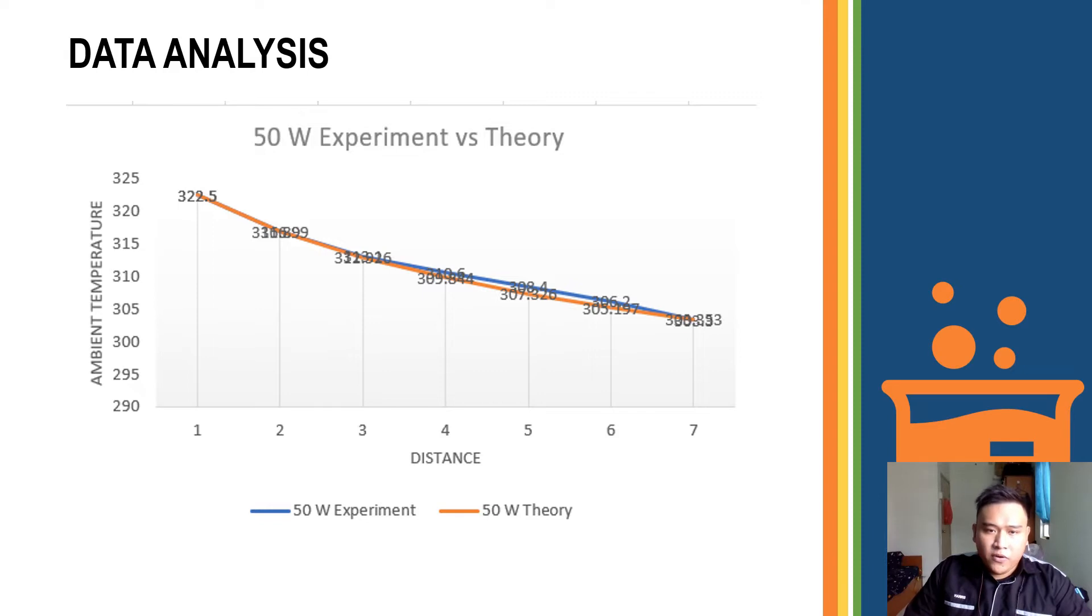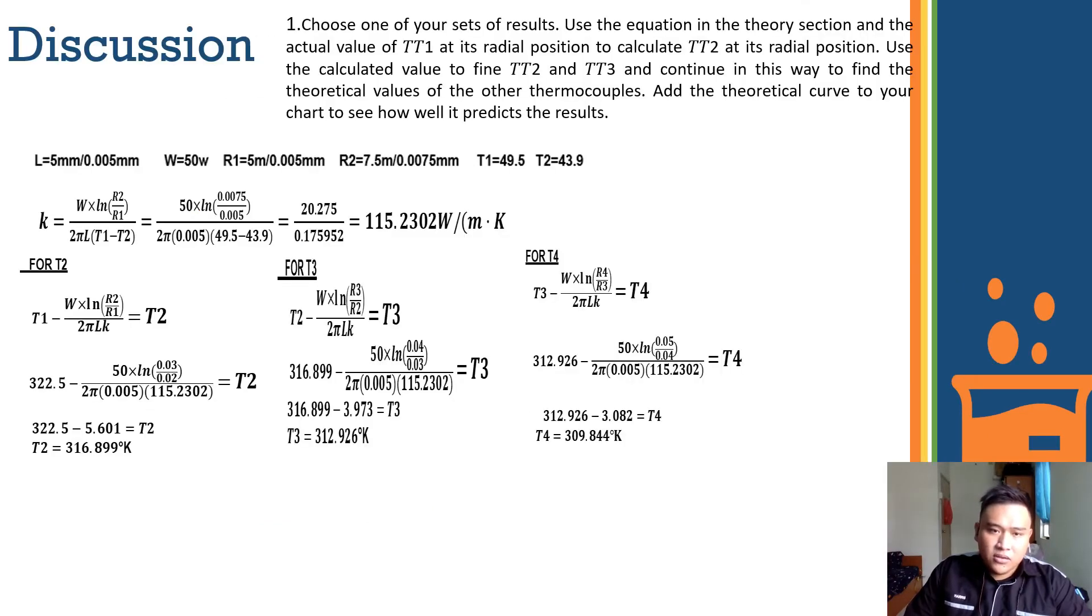Now, we proceed for the next slide, which is discussion. From discussion, for question 1, choose one of the set of results. Use the equation in the theory section and the actual value of T1 and its radial position to calculate T2. At its radial position, use the calculated value of T2 and T3 and continue in this way to find the theoretical value of the other thermocouples. Use the theoretical curve on your chart to see how you predict the result. This means we have to find the value of theoretical data by using T1 from the actual experiment data.